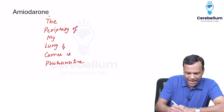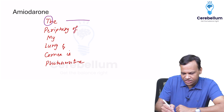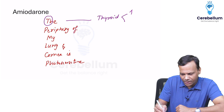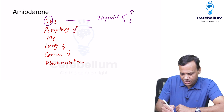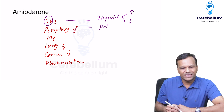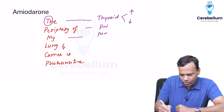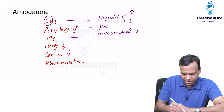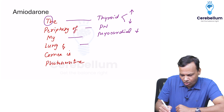In this mnemonic, 'T' stands for thyroid — amiodarone can cause either hyperthyroidism or hypothyroidism. It can also cause peripheral neuropathy, myocardial depression (a negative inotropic action on the heart), and lung fibrosis.